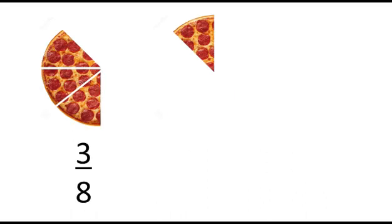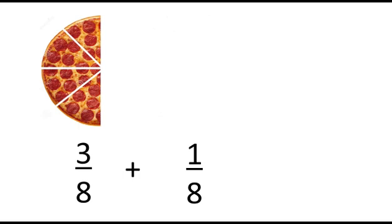For our first lesson, let us have adding similar fractions. We have 3 eighths pizza and 1 eighths pizza. They are called similar fractions because they have the same denominators. If we will add 3 eighths and 1 eighths, we will get 4 eighths, or 1 half.